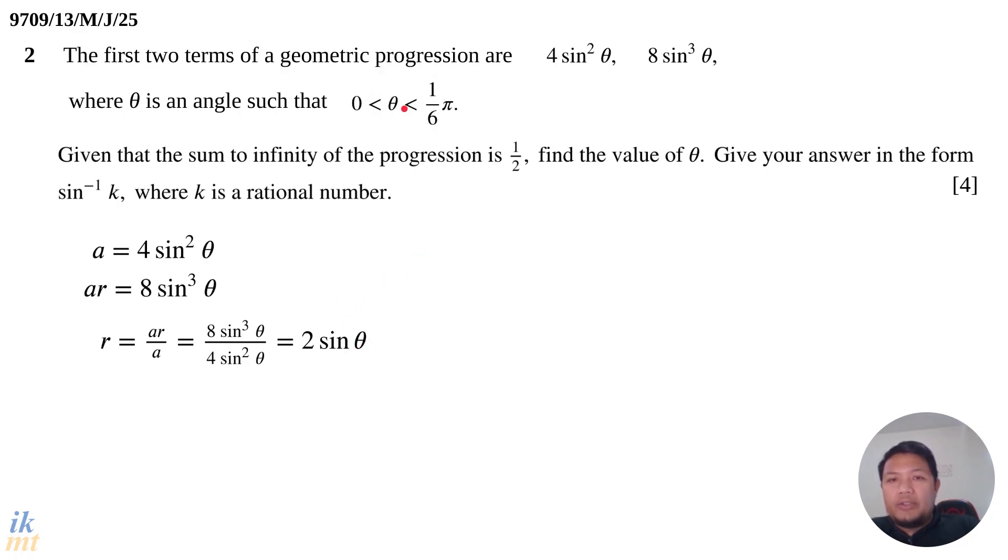If θ is 0, then r is 0. If θ is π/6, then r will be 2 times sin(π/6), and sin(π/6) is 1/2. So 2 times 1/2 is 1. That means r will actually be between 0 and 1, not including 0 and 1. Therefore, the sum to infinity will exist. We have found that r is between 0 and 1, based on the restrictions on θ.